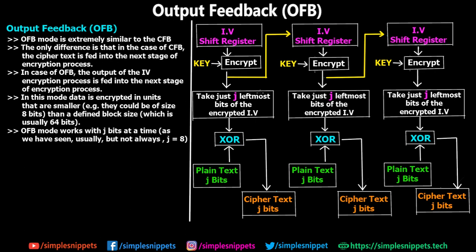Coming back to today's topic, on the right-hand side of the screen we have the complete diagram of the entire working process, and on the left we have some theory. If you've seen the previous video on cipher feedback mode, pretty much everything in the diagram is similar to cipher feedback, except the yellow feedback line — that is the only major difference between cipher feedback and output feedback.